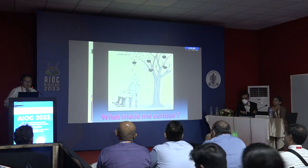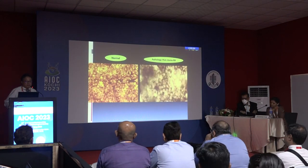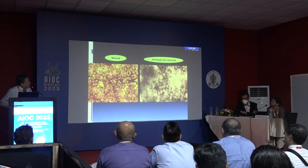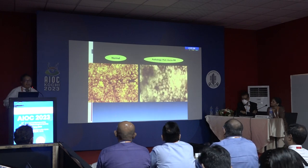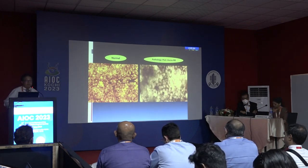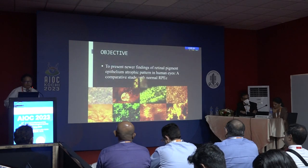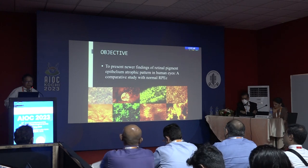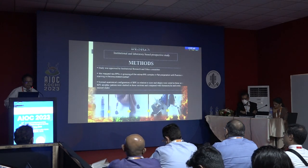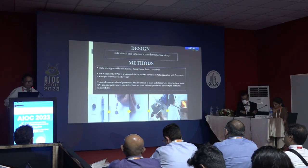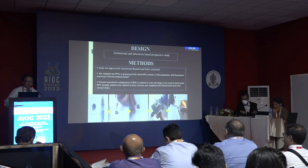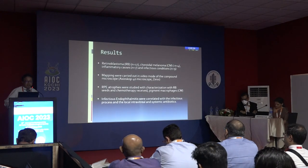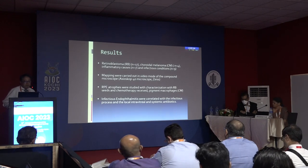What made me think curiously was this: photograph one is a normal RPE and the other shows atrophic areas within the RPE in retinal post-chemotherapy retinoblastoma cases. The objective of this presentation is to identify newer findings of retinal pigment epithelium atrophic changes in human eyes. This is an institutional-based prospective study where ethics committee approval was obtained.